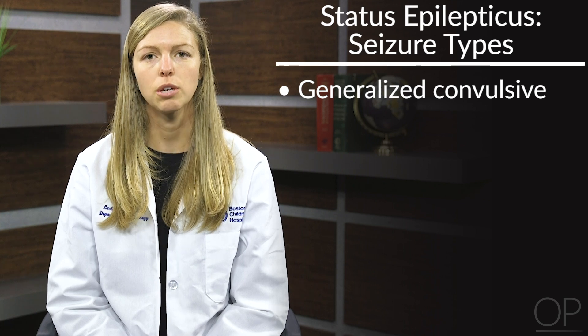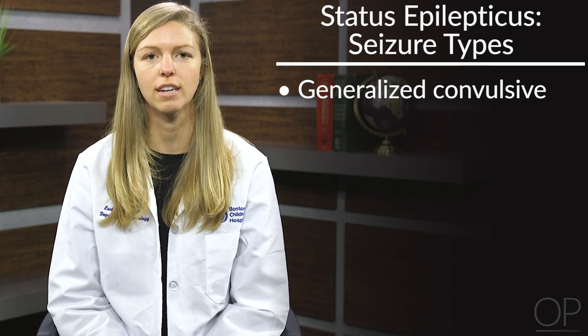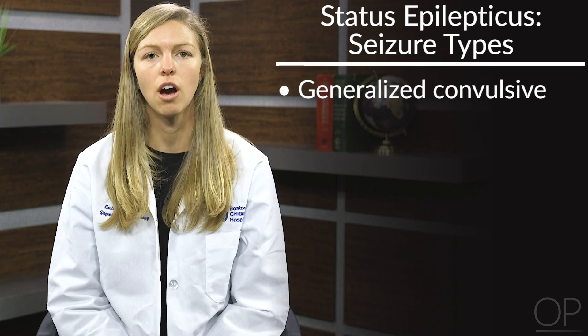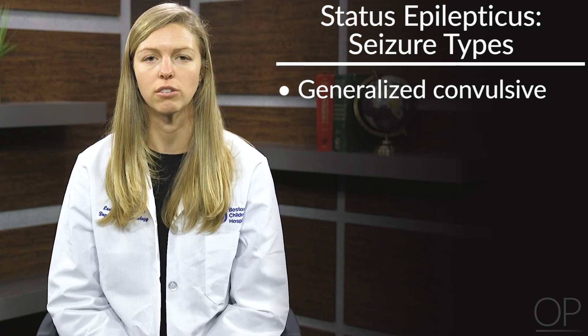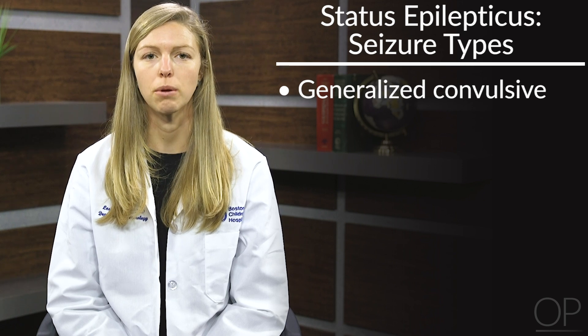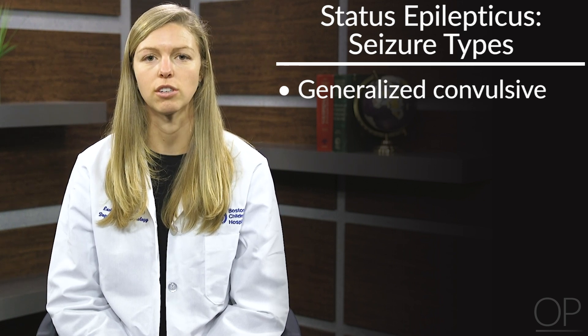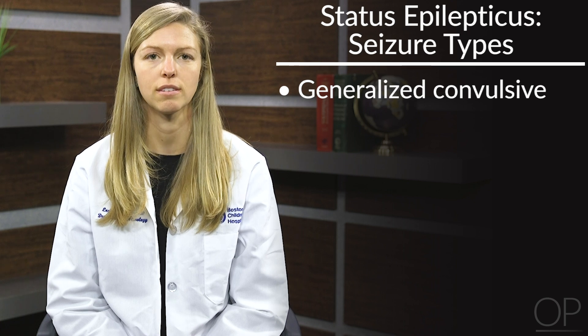Status epilepticus can present with different seizure types. Most commonly, you will see generalized convulsive status epilepticus, which can be described as a rhythmic pattern of contraction and extension of the arms and legs occurring while the patient is unresponsive. This can occur in patients with known epilepsy, young children with prolonged febrile seizures, or in patients with infection such as cerebral malaria or meningitis.